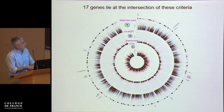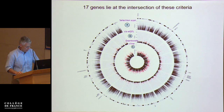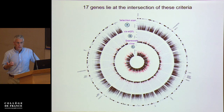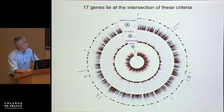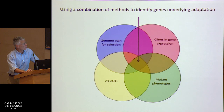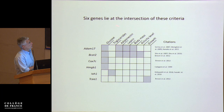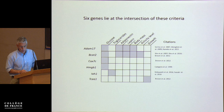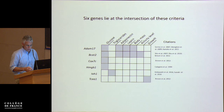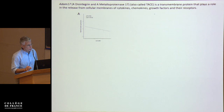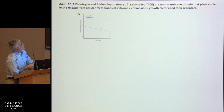When you look at the intersection of those three approaches, only 17 genes show up. Because we're working with mice, we have a great database of hypomorphic mutations and knockouts, so we can ask which of those 17 genes show phenotypes in the lab that resemble the ones distinguishing the ends of the cline. That narrows us down from 17 to just six genes for which there are known lab mutants that recapitulate some of the differences we see between the ends of the cline. I'm going to focus on the top two: ADAM17 and BCAT2.